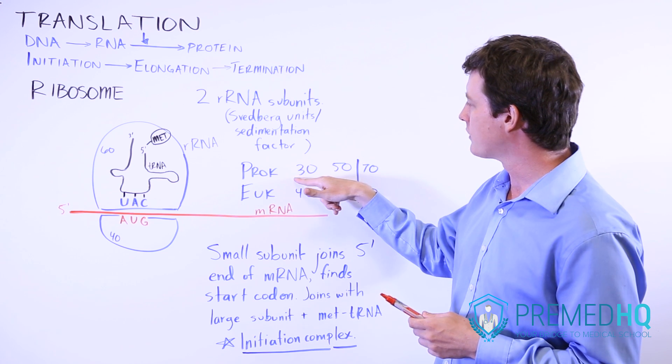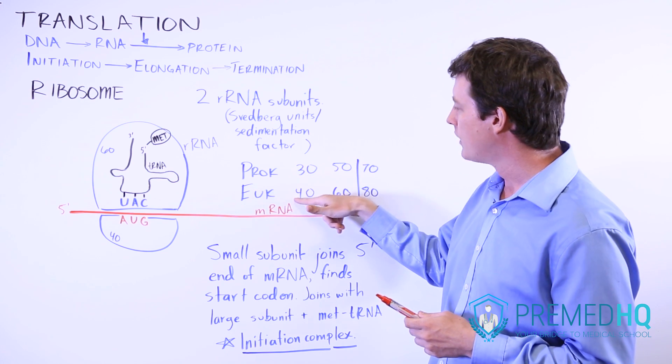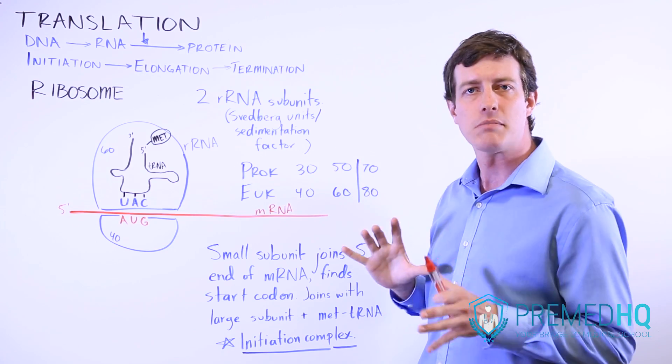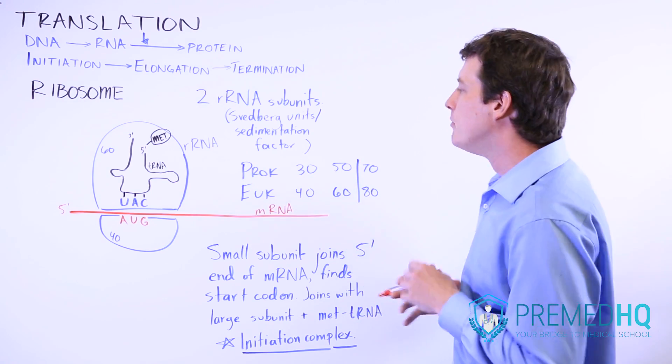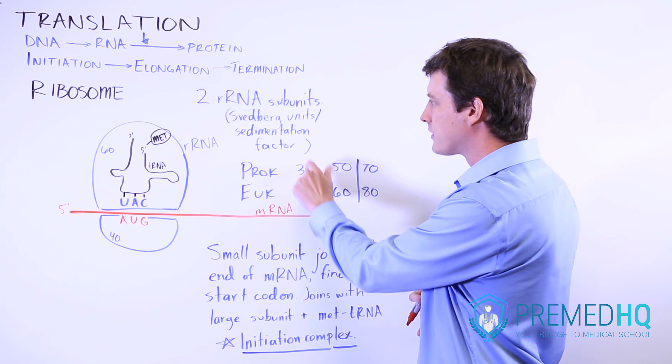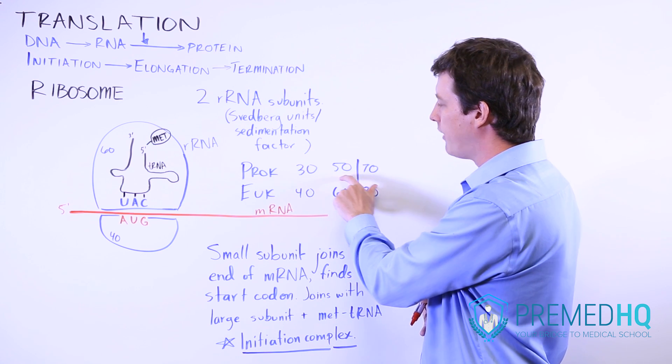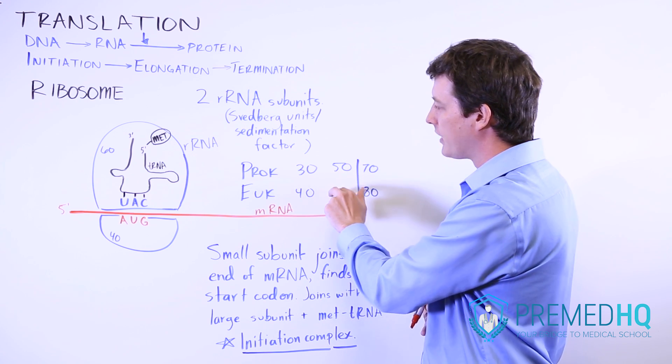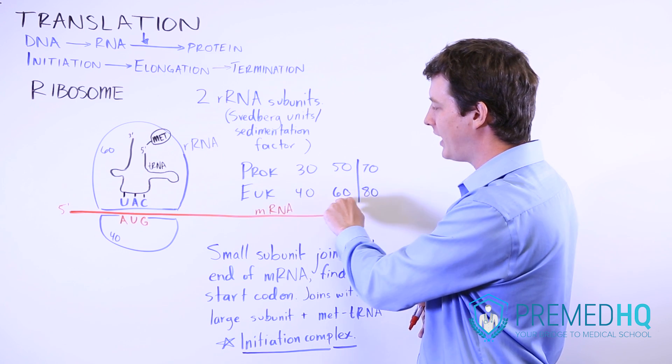That refers to something with 30 Svedberg units, 40 Svedberg units—this is a measurement of their size. Prokaryotic ribosomes have a 30 Svedberg subunit and a 50 subunit, and eukaryotic cells have a 40 and a 60.